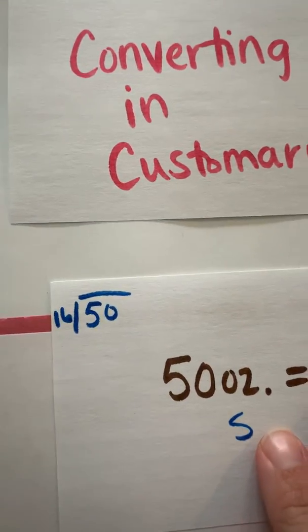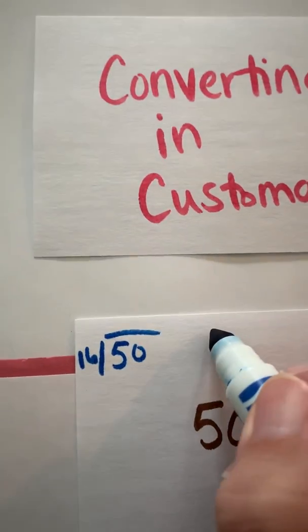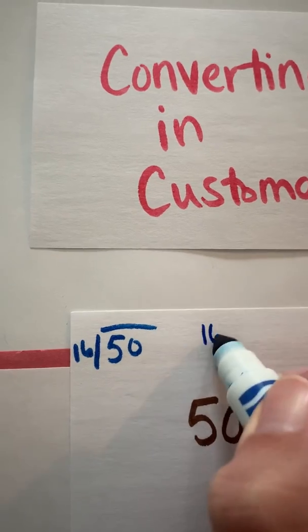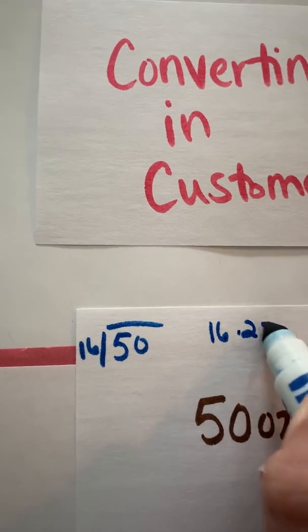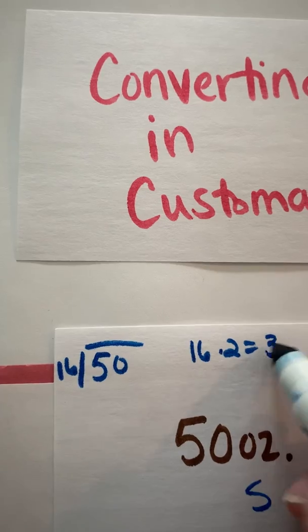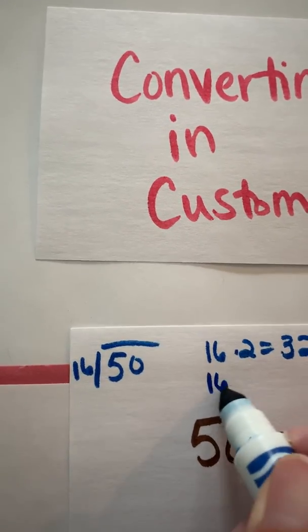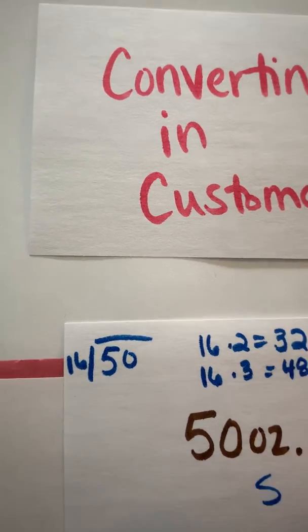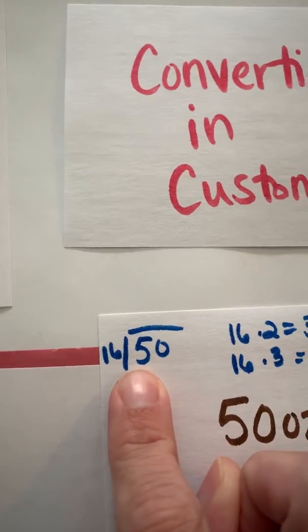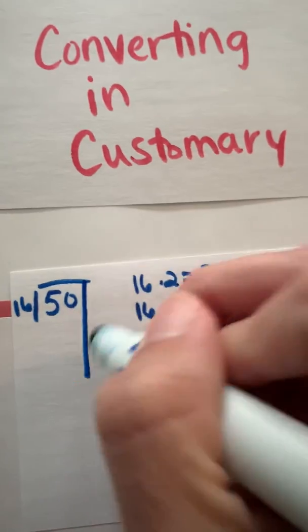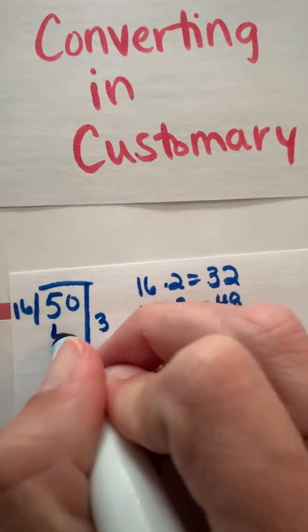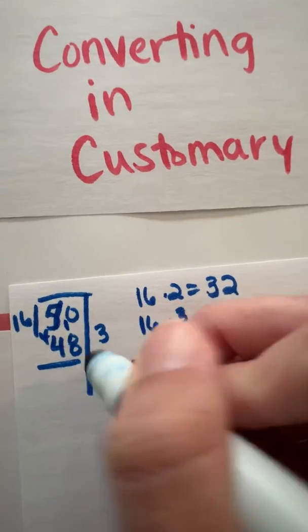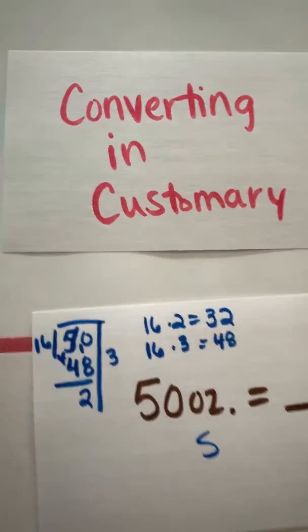I know 16 times 1 is going to be kind of too far away. So I'm going to go 16 times 2. If I know my facts, that is going to give me 32. And then 16 times 3 is going to give me 48, which is pretty close to 50. So I'm going to divide by 3. So 16 times 3 is 48. And I can regroup or I could just count it 49, 50. I'm going to have 2 left over.